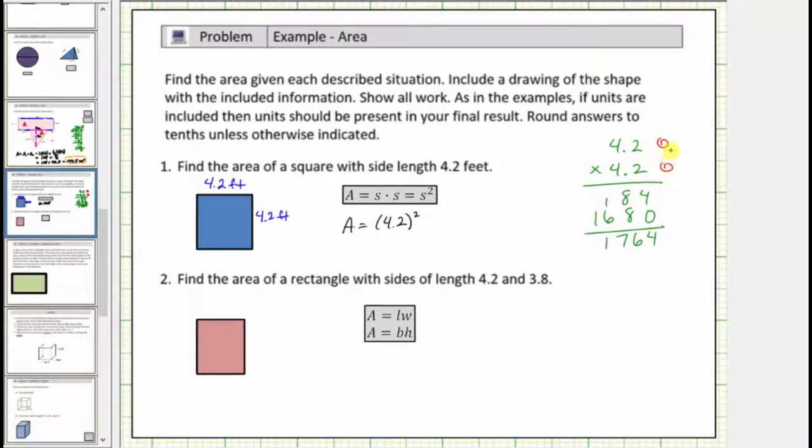Because our quotient must contain two decimal places, starting on the far right, we move two decimal places. The quotient is seventeen point six four. And this should make sense because we know that four squared is equal to sixteen. And therefore, the square of four point two is more than sixteen. So the exact area is seventeen point six four, or seventeen and sixty-four hundredths, and the units would be square feet.